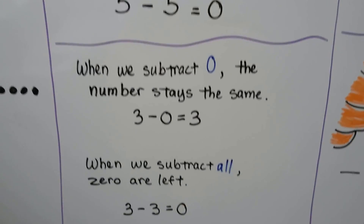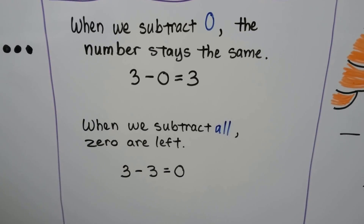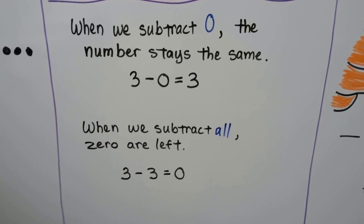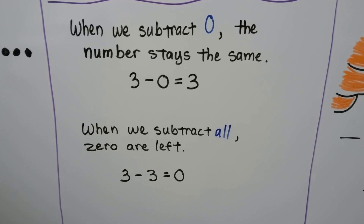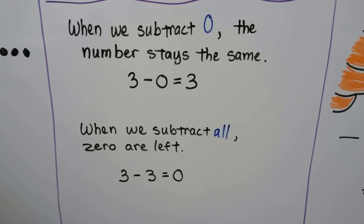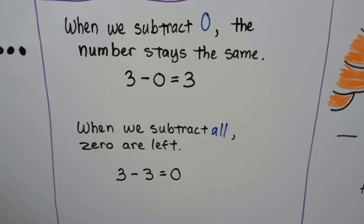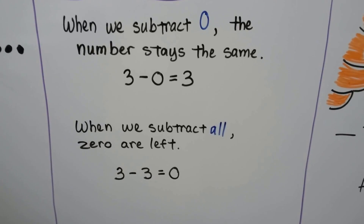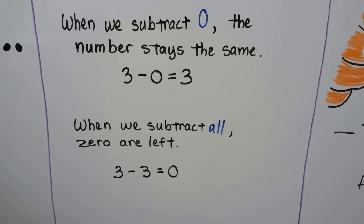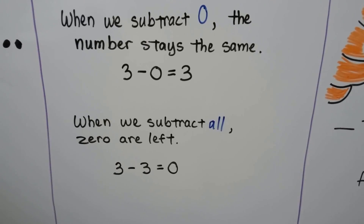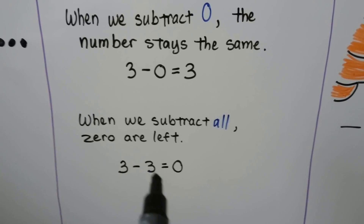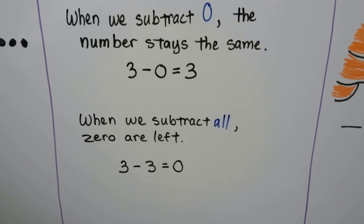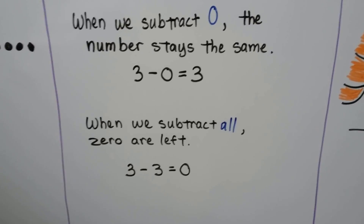When we subtract zero, the number stays the same. Three minus zero equals three — the three stayed the same. When we subtract all, zero are left. If we have three and we take three away, there's zero left. It equals zero.